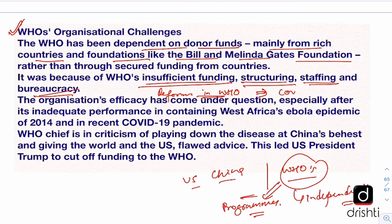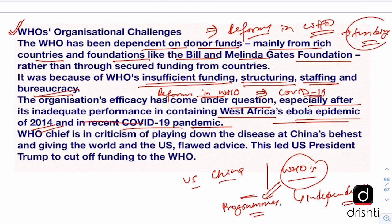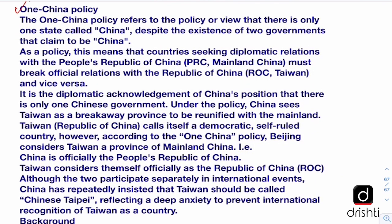The organization's efficacy has come under question especially after its inadequate performance containing West Africa's Ebola epidemic of 2014 and its recent handling of the COVID-19 pandemic. These organizational challenges require reforms in WHO's structure, functioning, and funding. As long as funding is contingent on a few countries, it will always detract from WHO's independent action.